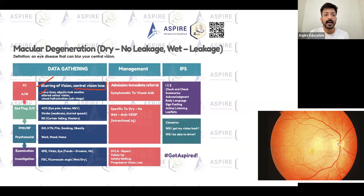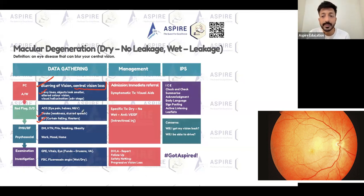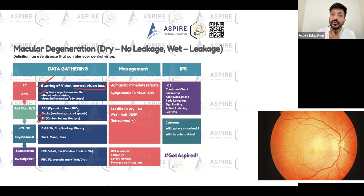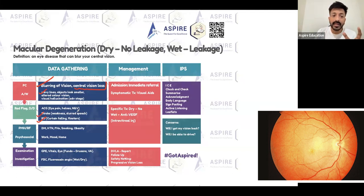What are your differentials? First is retinal detachment — curtain falling, floaters — that is very important. Another is stroke: weakness or slurred speech. There is a condition called amaurosis fugax, which is really important — the patient can have sudden loss of vision, and that is very important here.